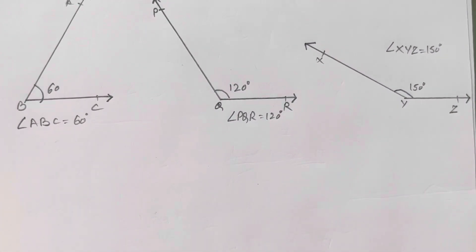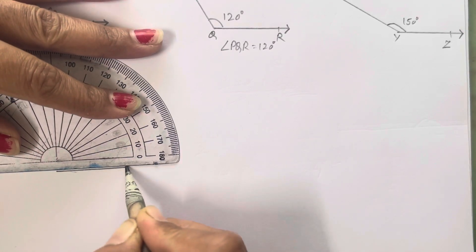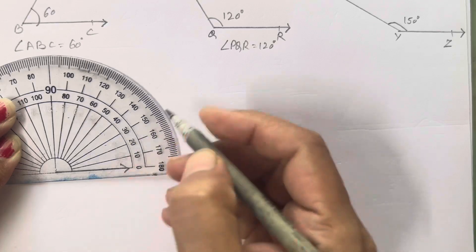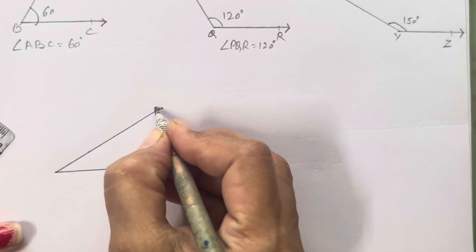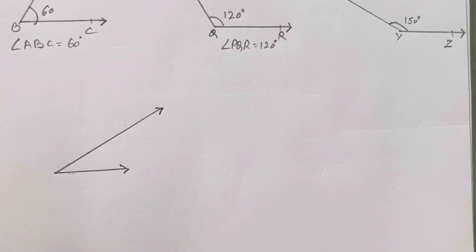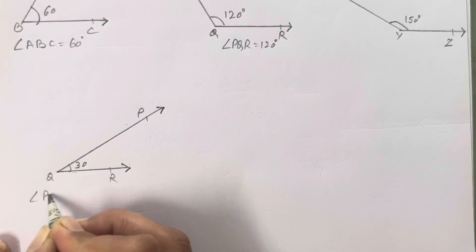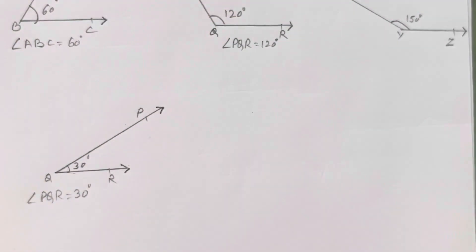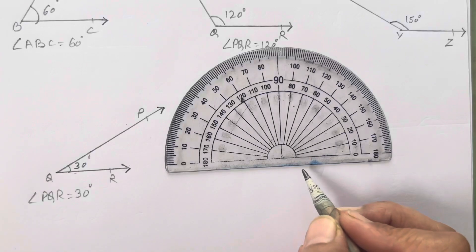Next is 30 degrees. Draw the base, place the center, mark at 30 using inside numbers — this is your 30 degree angle. Don't worry if the arms are slightly short or long, it won't matter. Name it PQR. Angle PQR equals 30 degrees.